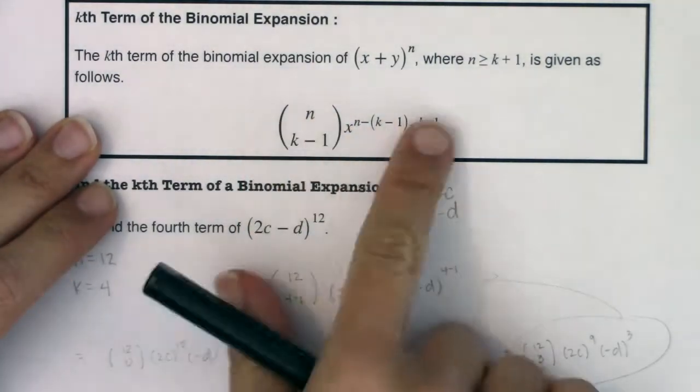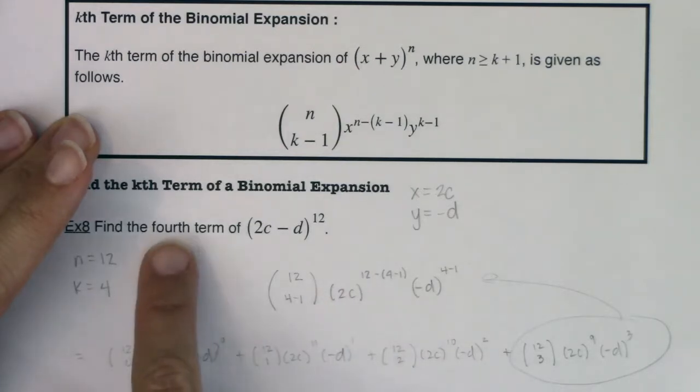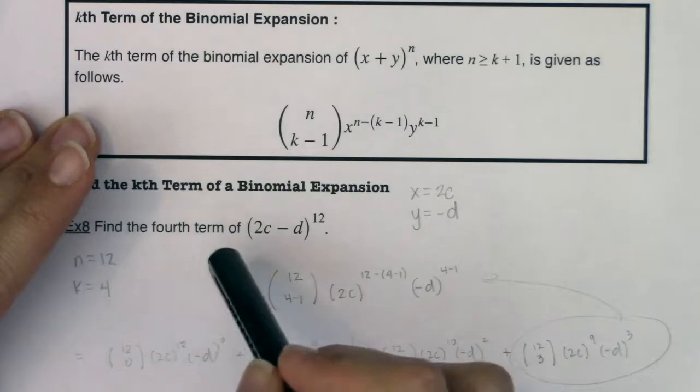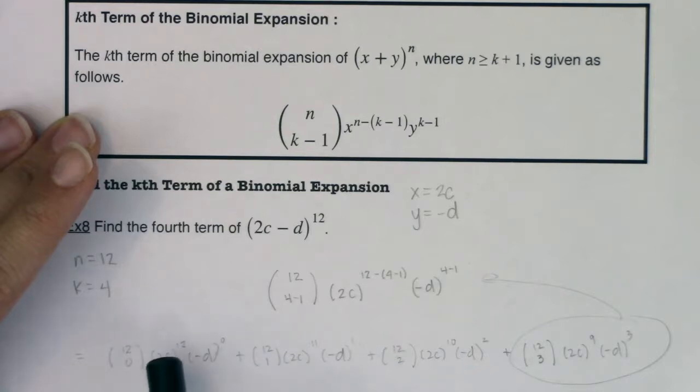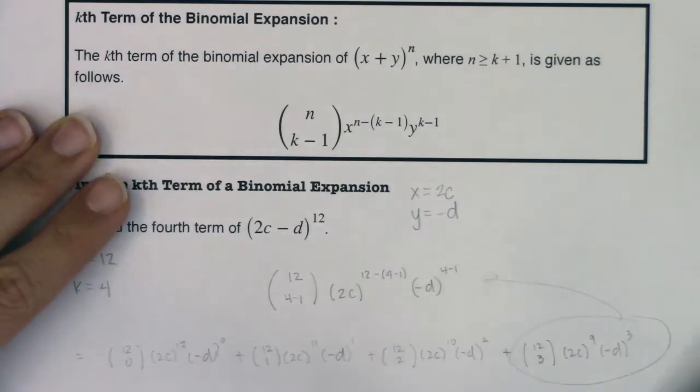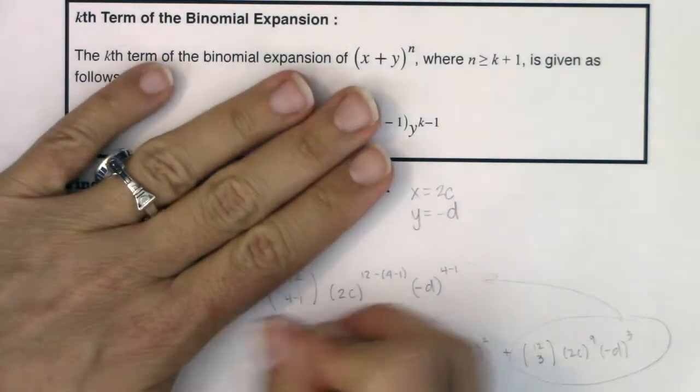So again, this formula, it totally works, but I want us to also see how it connects to the binomial theorem, right? If I want the fourth term, it would have initially been 12 choose 0, 12 choose 1, 12 choose 2, 12 choose 3, so there's my coefficient. All right? The powers on 2c would have been 12, 11, 10, so this would have been 9, and then d would have been 0, 1, 2, 3. That's where I'm getting all of these numbers. All right, so let's clean this up, see what we got.